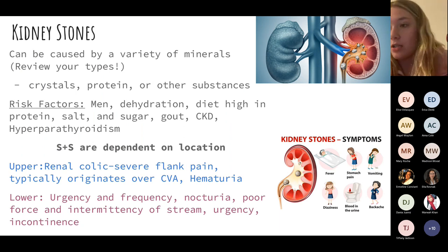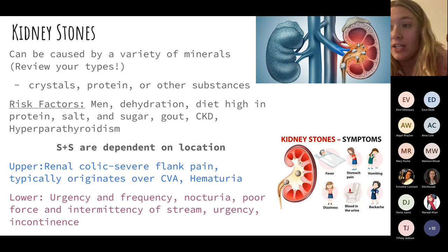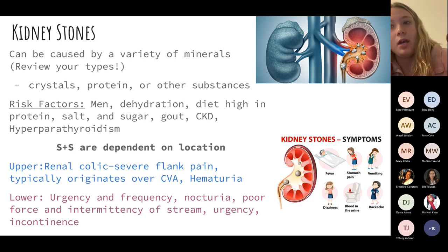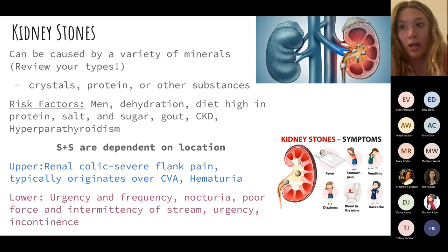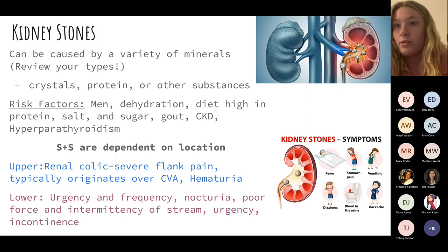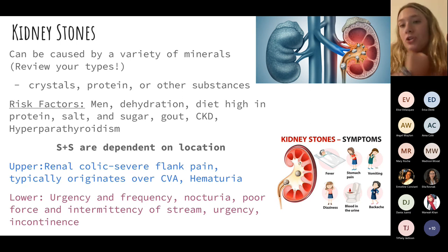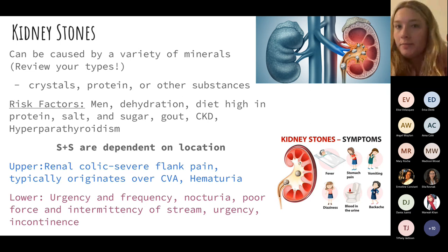Kidney stones are one of our most common causes of obstruction. Risk factors include diets high in protein, salt, and sugar, and simply being dehydrated. Symptoms are dependent on location. Upper stones cause renal colic — colicky pain that comes and goes — with severe flank pain and hematuria over the CVA angle. Lower stones present with more urinary-related symptoms.